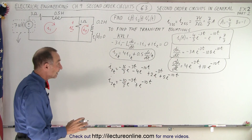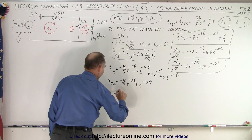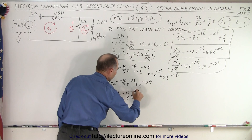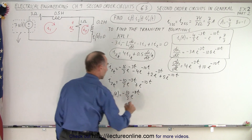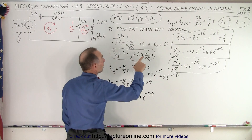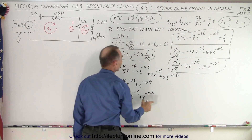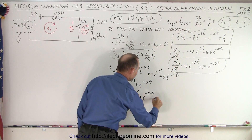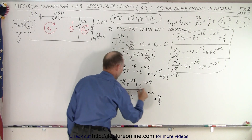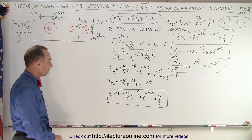Now all I have to do is add the constant portion, so i2 as a function of time equals minus ten-thirds e to the minus three t plus e to the minus ten t. And remember that the steady-state current for mesh two is the same as it is for mesh one, so we simply add plus seven-thirds to that, and we now have an equation that gives us the current for the second mesh as a function of time.